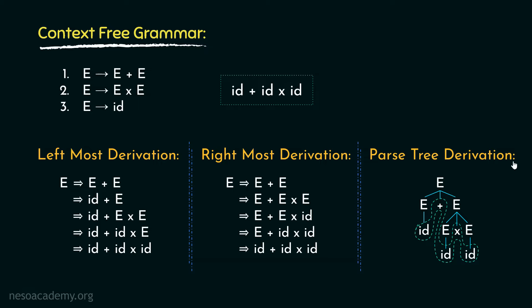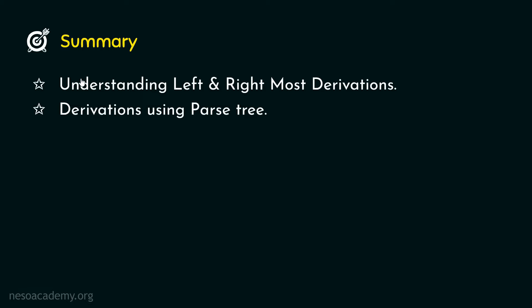Do remember, this is the most popular and time-effective derivation procedure. So in this session, we acquired the understanding of left and rightmost derivations, also the derivation procedure using parse tree. I hope the different derivation methods are now clear to you. In the next session, we will learn about the ambiguity in context-free grammars. I hope to see you in the next one. Thank you all for watching.